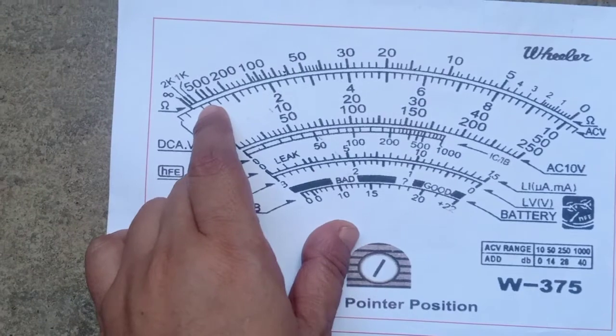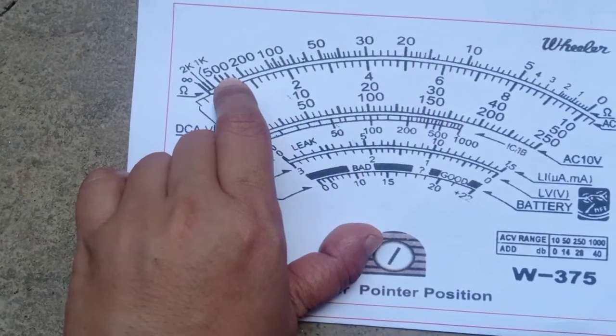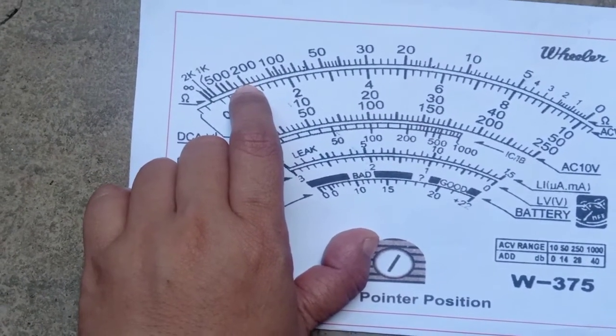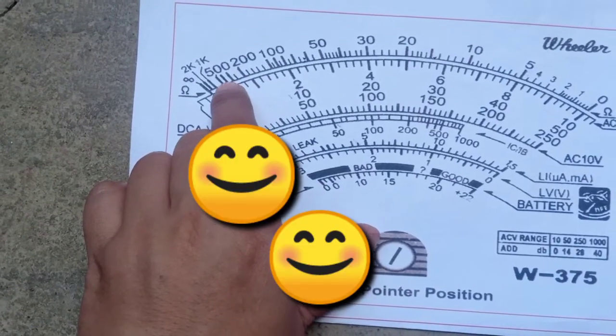200 to 500, may makikita yung talahati. Ibig sabihin nun, that's 50 and the rest is 100. So, 200, 250, 300, 400, 500.